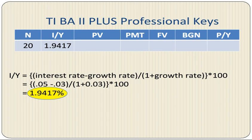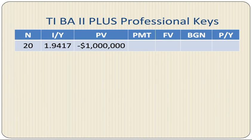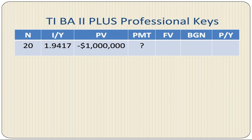This is a tricky part. We have to use the formula shown to calculate the interest rate. We are going to set present value equals 1 million dollars. Payment is what we are trying to determine. Future value equals 0.